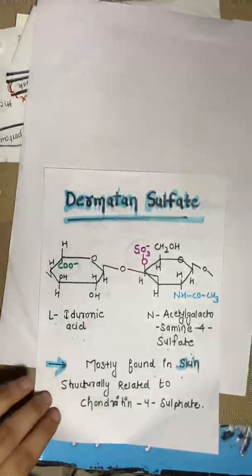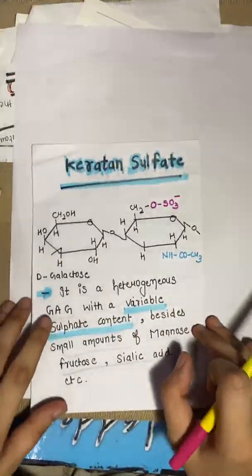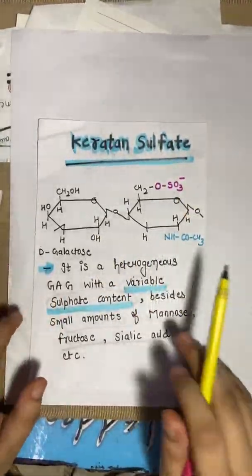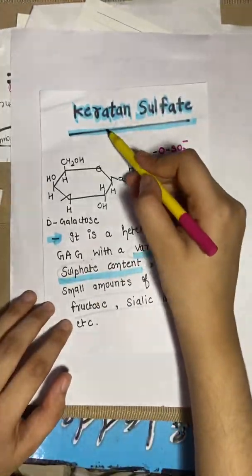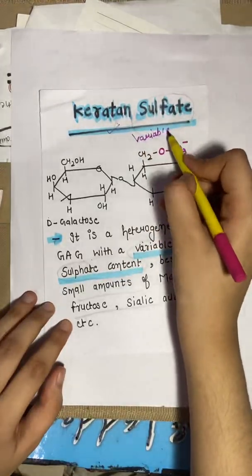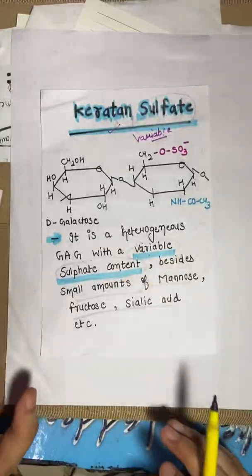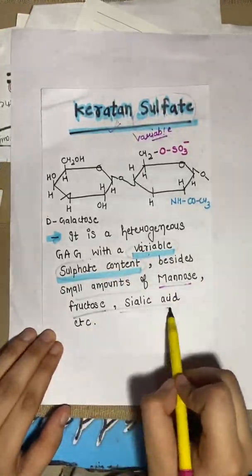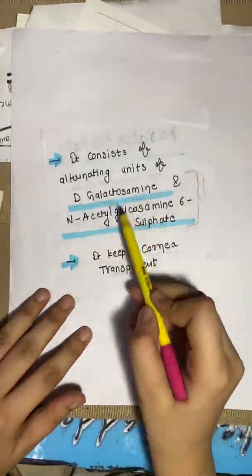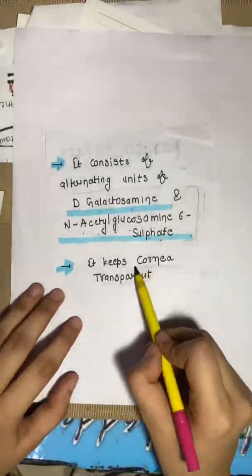The fifth GAG is keratan sulfate. Its structure contains a sulfate group with variable sulfate content. It may also contain mannose, fructose, and sialic acid. The main repeating unit is D-galactose and N-acetyl glucosamine 6-sulfate.